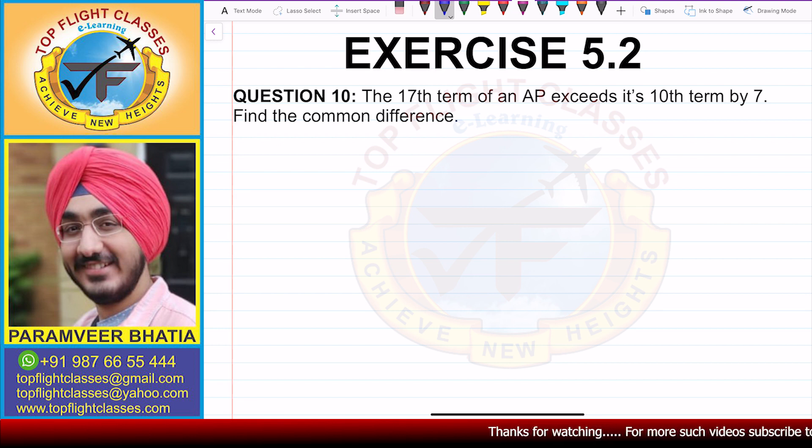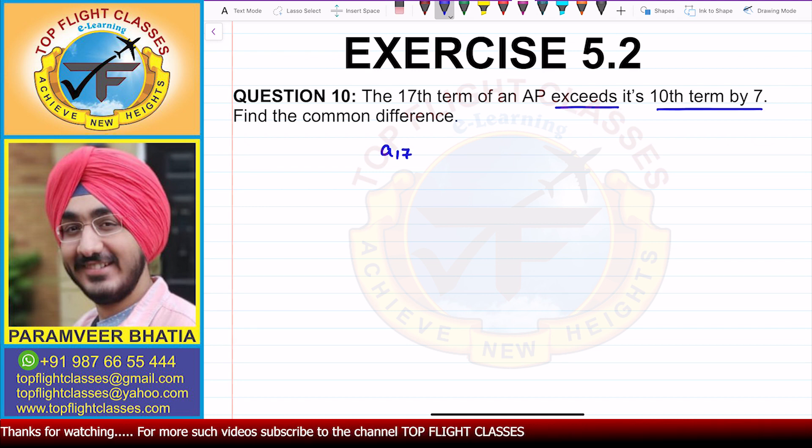Question number 10 says the 17th term of an AP exceeds its 10th term by 7. Find the common difference. So the 17th term exceeds the 10th term by 7, and we have to find the common difference.